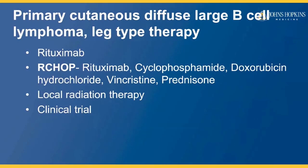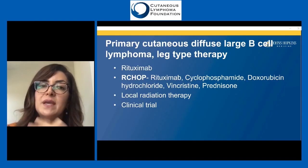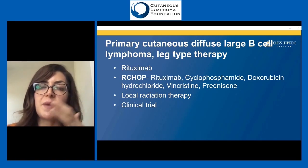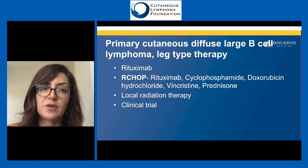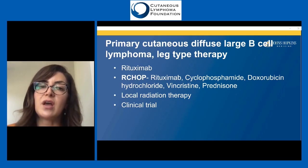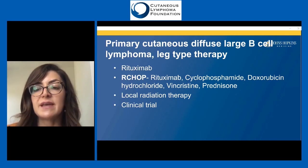Primary cutaneous diffuse large B cell lymphoma, especially leg type, is more commonly seen in elderly patients and more common in women. Because it's more aggressive and can have extracutaneous involvement of other organs, our first-line therapy is often rituximab or R-CHOP — rituximab with multi-agent chemotherapy. Local radiation therapy is still an option for these patients, as is enrollment in clinical trials for non-Hodgkin lymphoma or diffuse large B cell lymphoma at centers with that availability.